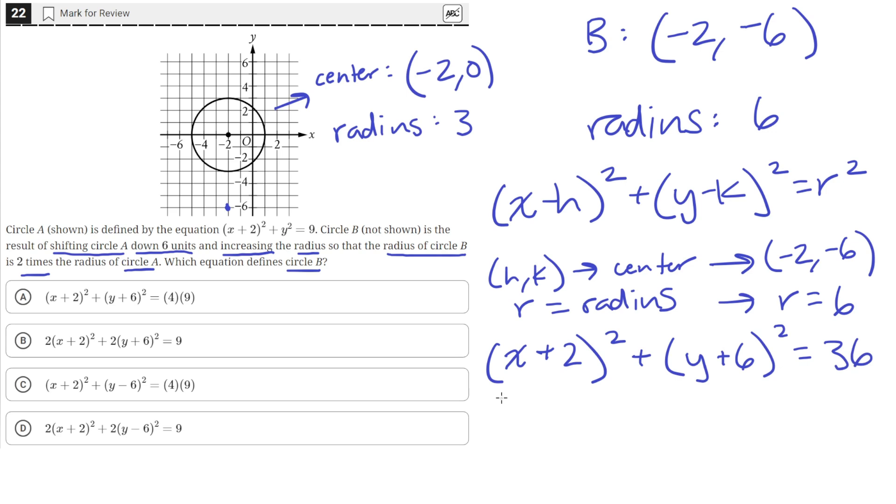And this equation is equivalent to answer choice A, because 4 times 9 is just 36, and we have x plus 2 and y plus 6 on the left hand side. So A is the correct answer.